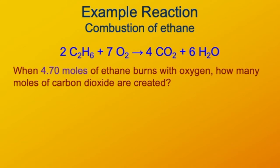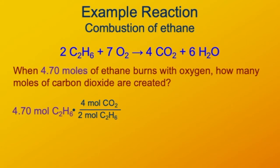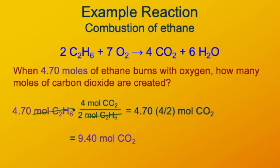Instead of how much oxygen is consumed, we'll ask how much product is created — specifically, how much carbon dioxide. Starting again with 4.7 moles of C₂H₆, the conversion is 4 moles of carbon dioxide for every 2 moles of ethane. Moles of ethane cancel out, and we're left with 4.7 times 4/2, giving us 9.4 moles of CO₂ created when 4.7 moles of ethane burn.